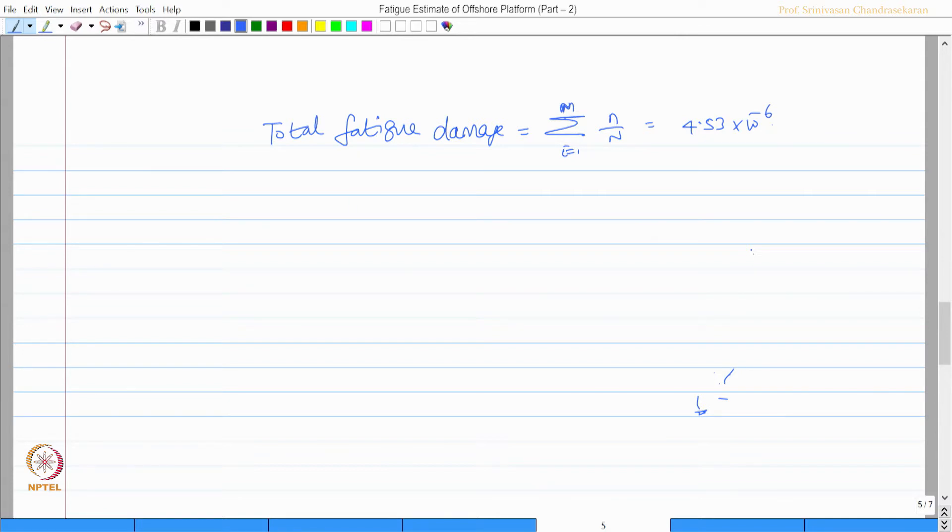This was estimated for 2000 seconds. Therefore, fatigue damage for 1 second is 4.53 times 10 power minus 6 by 2000, but I do not want know the damage, but I want to know the service life of the structure.